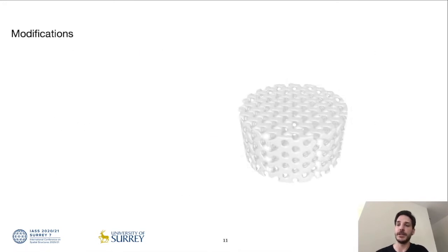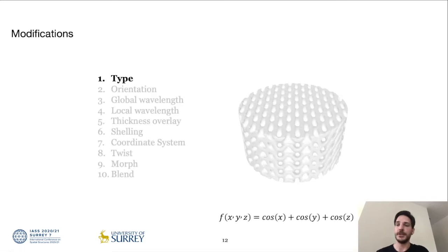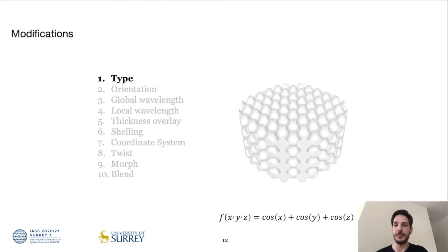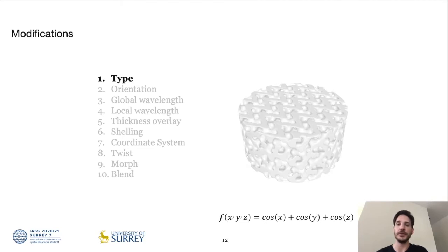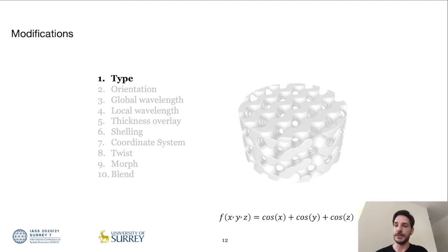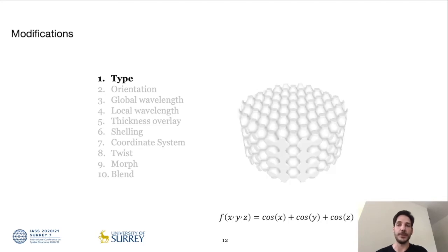In the following slides, I will introduce a palette of 10 different modifications that can be applied to this example input and a cylinder filled with a gyroid TPMS. The first modification is the type of TPMS. Besides gyroid, there are for example Schwarz P, diamond, lidinoid, neovius, or Fischer-Koch. They are all combinations of trigonometric functions of x, y, and z, as the one shown here for Schwarz P.